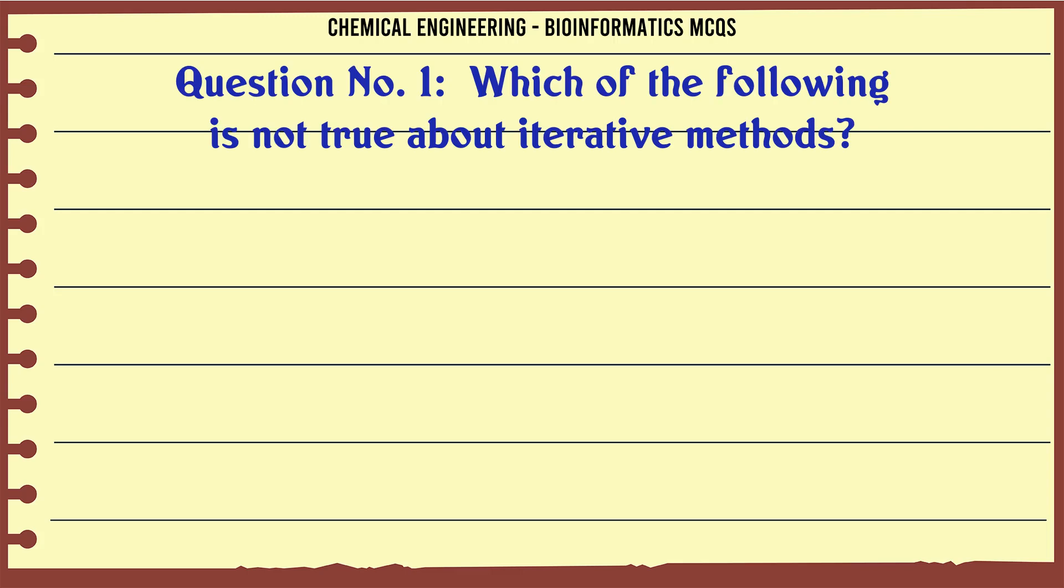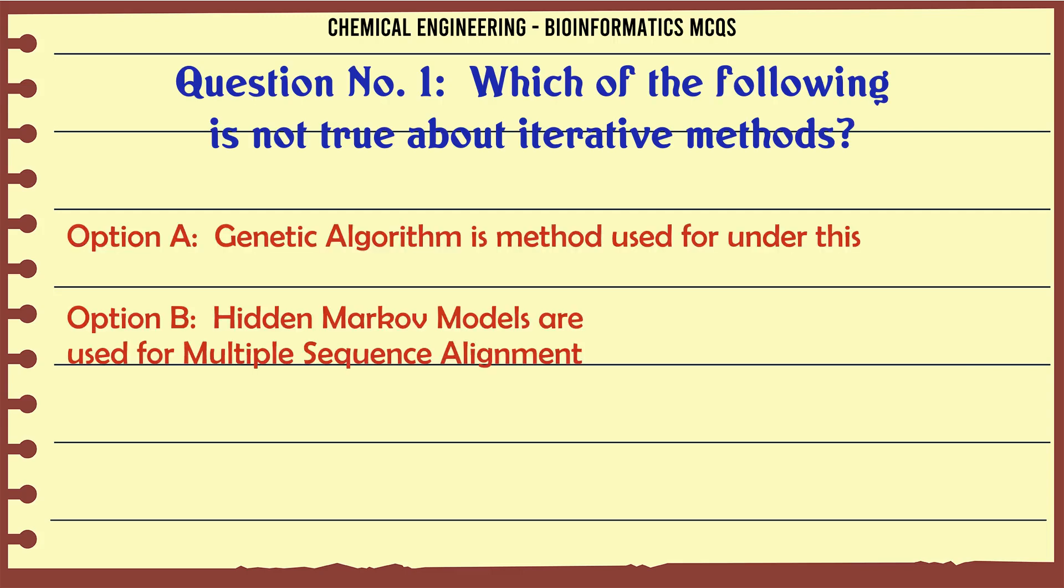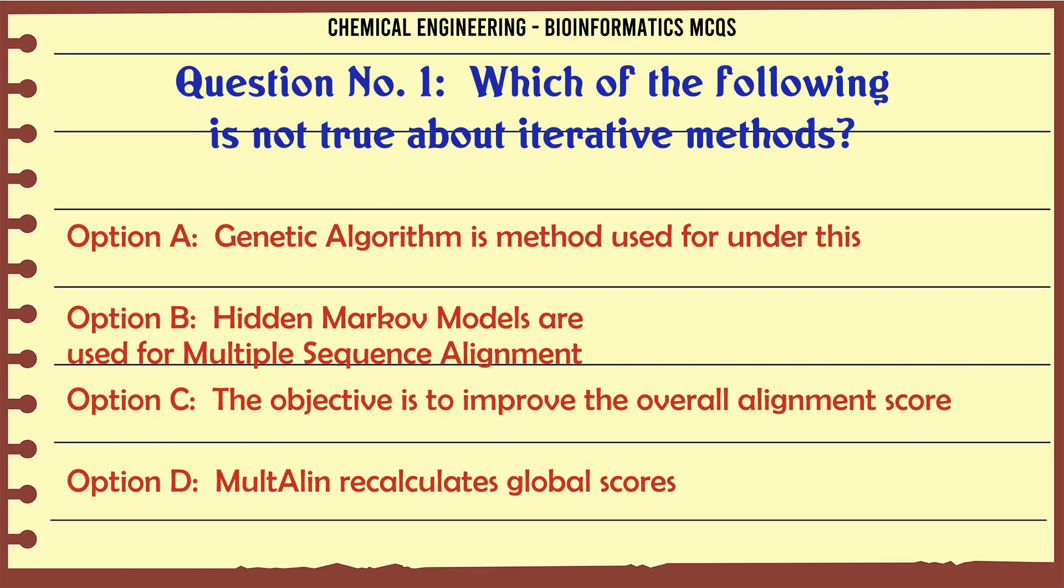Which of the following is not true about iterative methods? A. Genetic algorithm is a method used for under this. B. Hidden Markov models are used for multiple sequence alignment. C. The objective is to improve the overall alignment score.